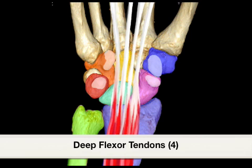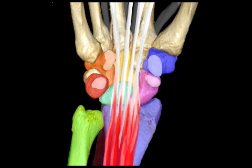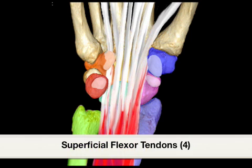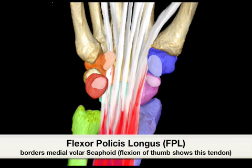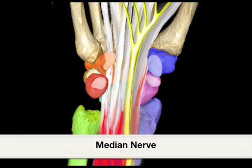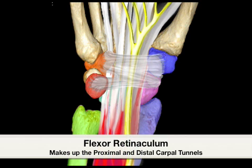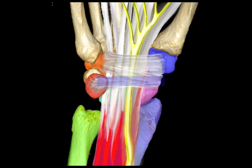Contained within the carpal tunnel are four deep flexor profundus tendons, four superficial flexor tendons, as well as the flexor pollicis longus tendon on the radial aspect, and the median nerve here in yellow.